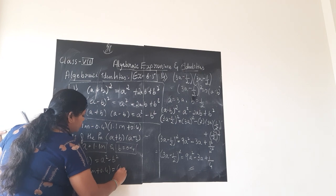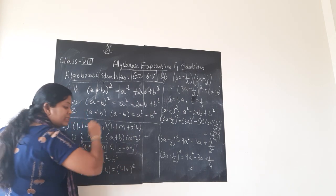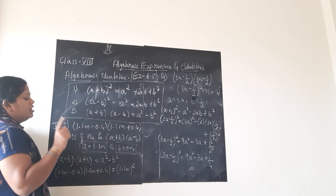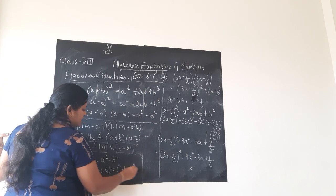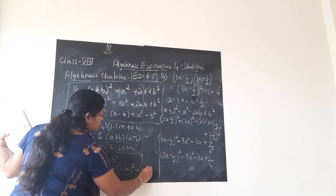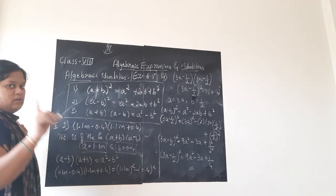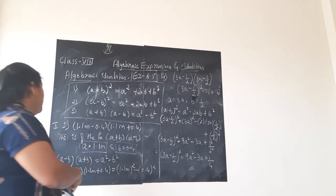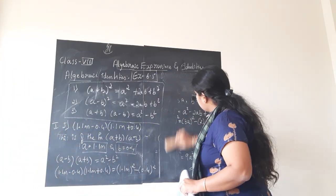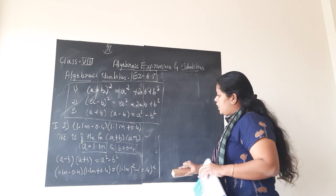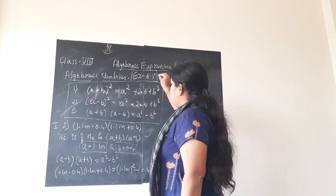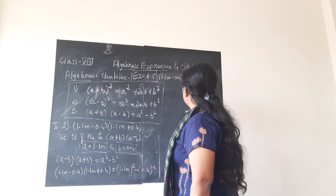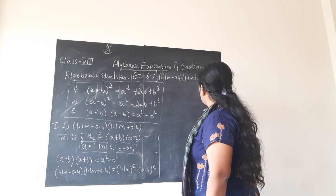And then a squared — you know, 1.1 into m whole square. Two terms: 1.1 is the constant, m is the variable. So we write it as 1.1m whole square, then minus b squared. What is in place of b squared? Only one term 0.4, so it is 0.4 squared.